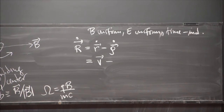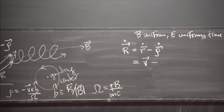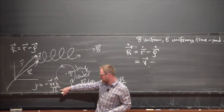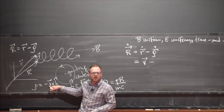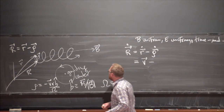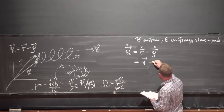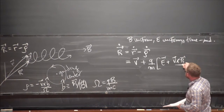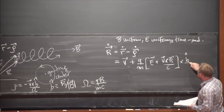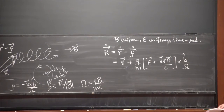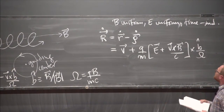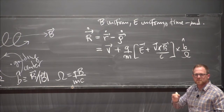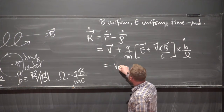Taking the time derivative, we keep B̂ and ω constant since the field is uniform, so the derivative hits V—and V-dot is just the acceleration, which is the Lorentz force: (Q/M)(E + V×B), crossed with B̂ and divided by ω. After applying the BAC-CAB rule, V×B×B gives minus the perpendicular component of the velocity, and you're left with two types of guiding center motion.